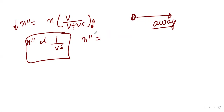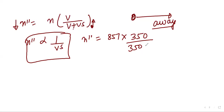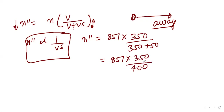Now put the values: n'' = 857 × 350 / (350 + 50) = 857 × 350 / 400. Solving this gives 750 hertz. So 750 hertz is the apparent frequency when the source is moving away from the observer.